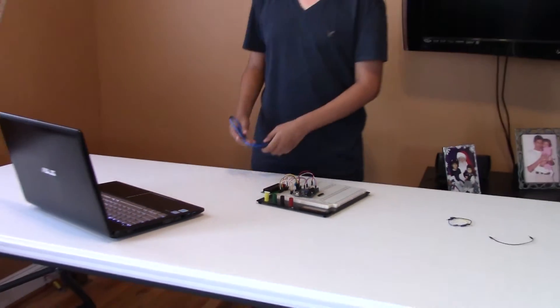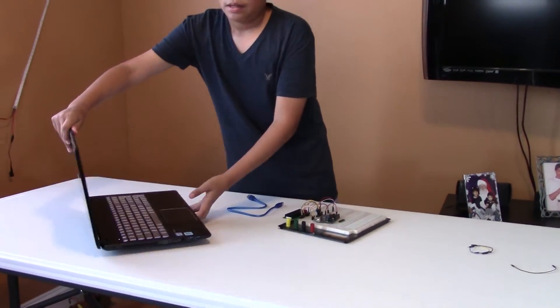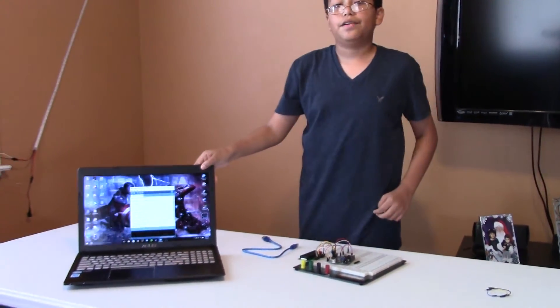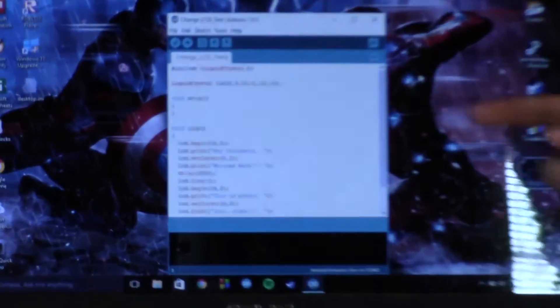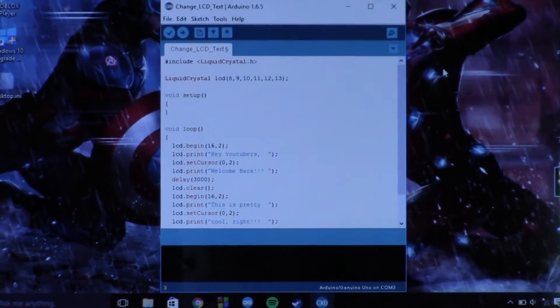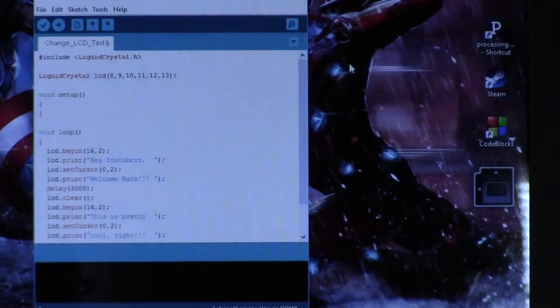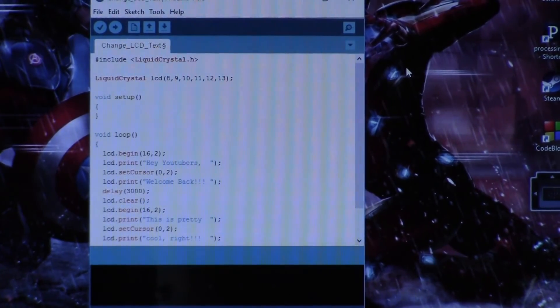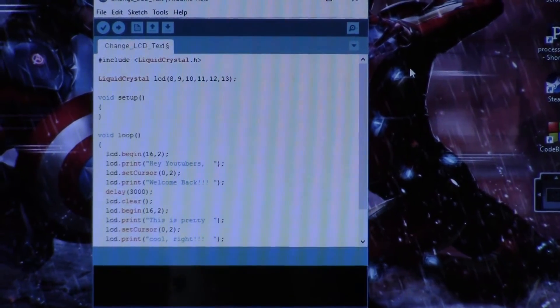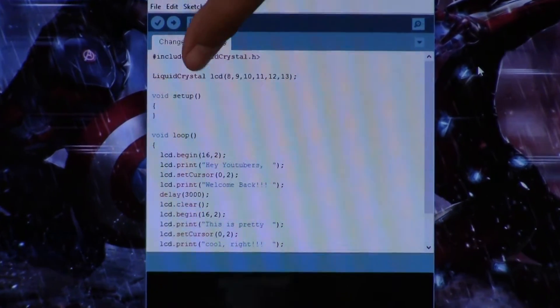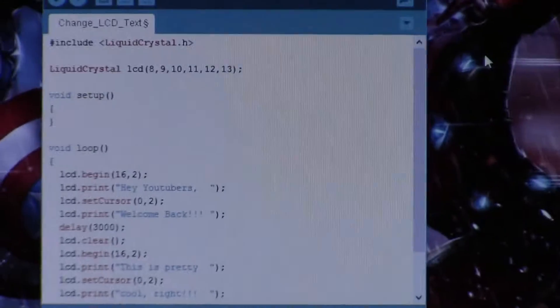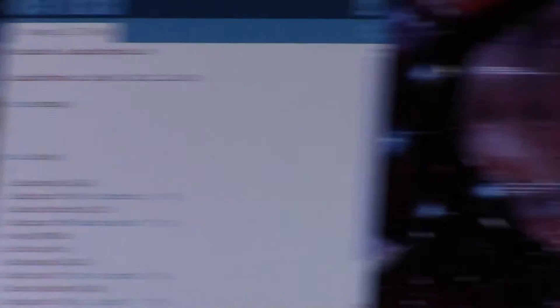For this, here's the code. We are going to first include the liquid crystal library which is on all Arduinos. Then we're going to define our LCD pins which are 8 through 13 on the Arduino. We're going to name it as LCD and put 8, 9, 10, 11, 12, 13. Remember to end all your lines in a semicolon otherwise it would be an error.